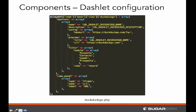Looking at how this one's constructed, it's very similar to the Box example, but we've added one additional piece: the filter configuration option. This filter configuration option defines exactly what modules and views this will work for. We've set it to only work for accounts, contacts, leads, and prospects, and only for the record view — so it will not be an option to add on any other view.